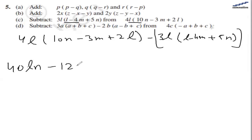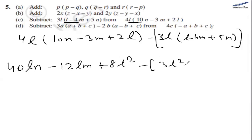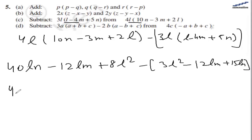Opening the first bracket gives 40lm, then we have 12lm plus 8l². From the second bracket, we get 3l² minus 12lm plus 12lm plus 15lm. Now let's open the second bracket.